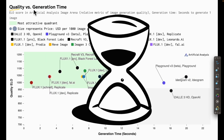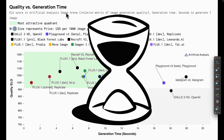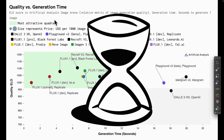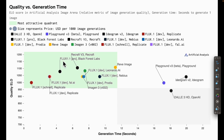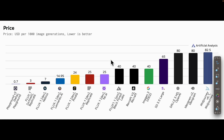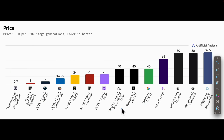We also have a chart for quality versus generation time. If you're looking for a model that can generate images with the highest quality but also very fast, this is the metric to look at. Recraft v3 has the highest quality but also a lower generation time, second by Flux 1.1 as well as Flux 1.1 Depth. Based on all the data so far, Imagine 3, Recraft v3, and Flux 1.1 have higher quality, lower generation time, and the best price — roughly around $40 per 1,000 image generations.